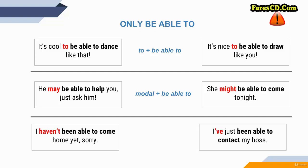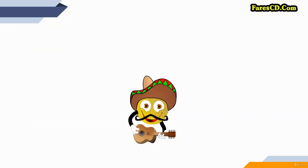One more case: 'I haven't been able to come.' 'I've just been able to contact my boss.' In perfect tenses, you need to use BE ABLE TO. As meaning, it has the same meaning as CAN — physical or mental ability.